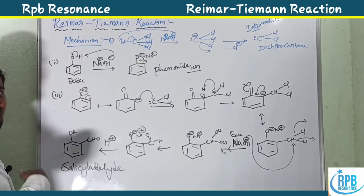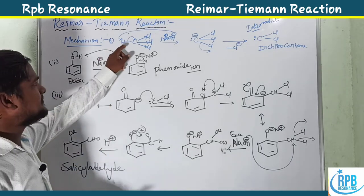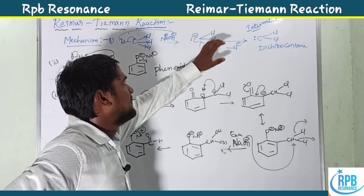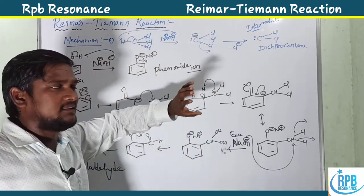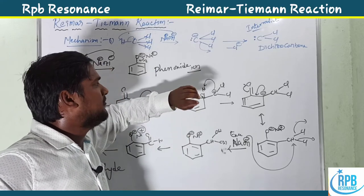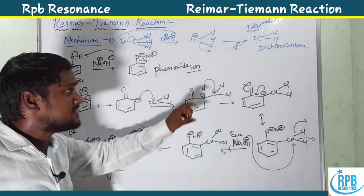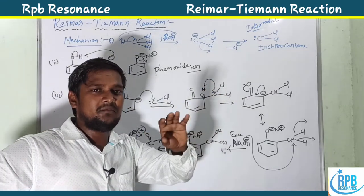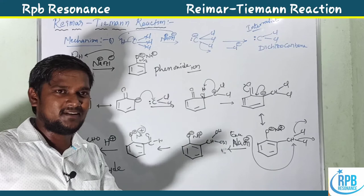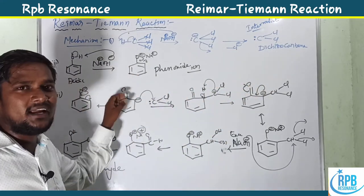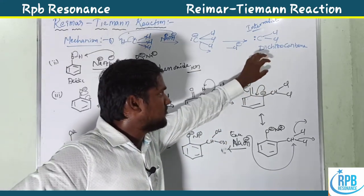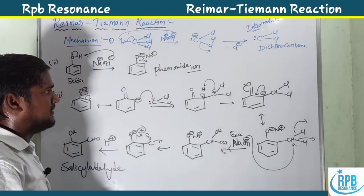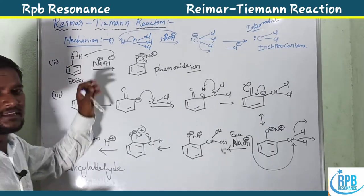Quick recap: In Step 1, trichloromethane treated with base loses one Cl⁻ (a leaving group) to form the reactive intermediate dichlorocarbene (:CCl2). This is the most commonly asked reactive intermediate in previous year exam questions about the Reimer-Tiemann reaction.